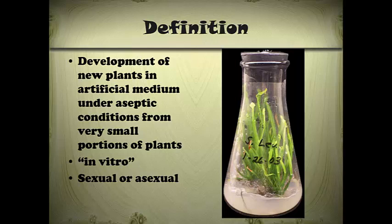One last point: the term aseptic. This is a very important component of tissue culture. Aseptic means sterile. You have to have plants growing in a sterile medium and sterile conditions for this to work. In the picture here, we have a plant growing in a flask, and that flask would have to be sealed for this to be successful.